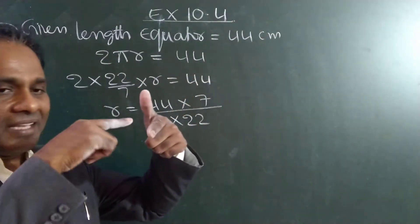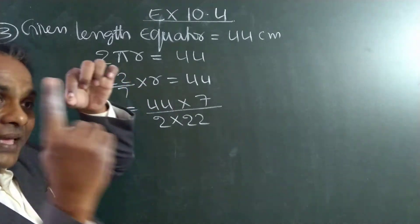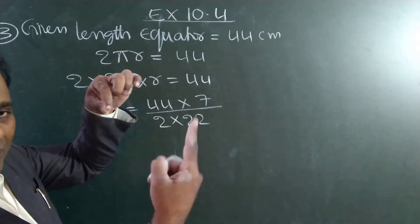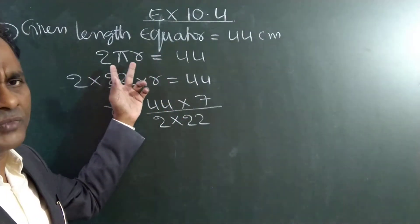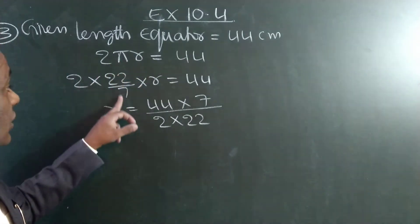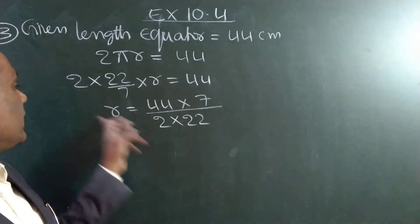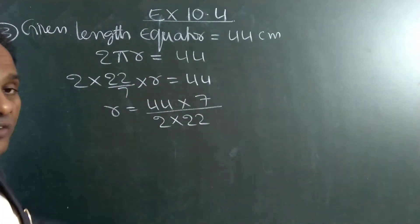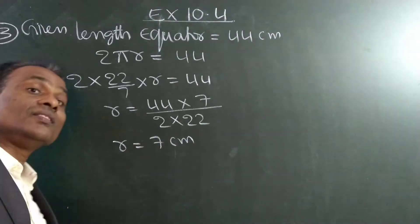Equator means it is not the diameter of the globe — it is the perimeter of the globe from the middle. So the total perimeter formula is 2πr. 2πr is equal to 44. So 2 × (22/7) × r = 44, then r = 44 × 7 ÷ (2 × 22). 44 cancels, and r is equal to 7 centimeters.